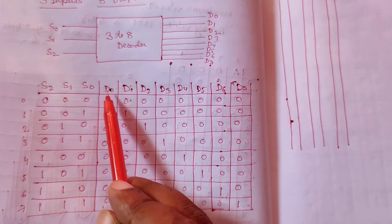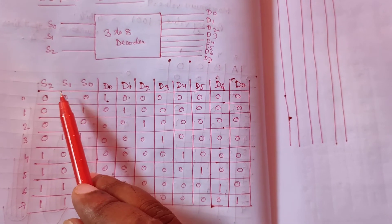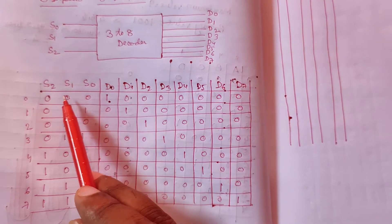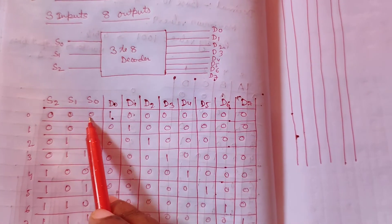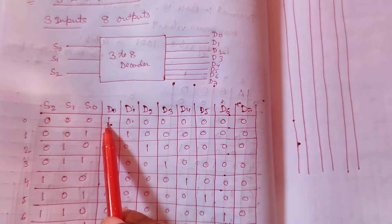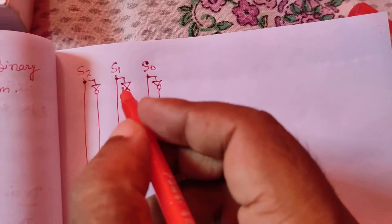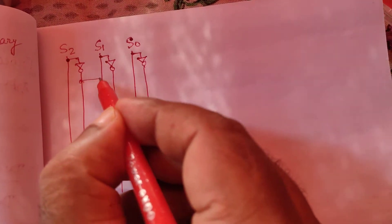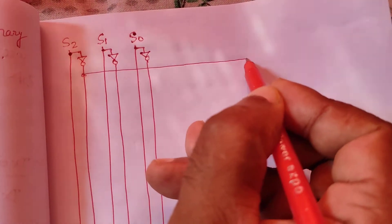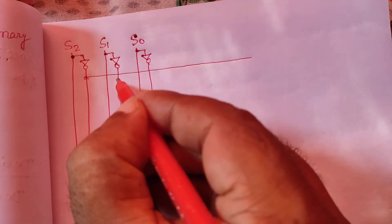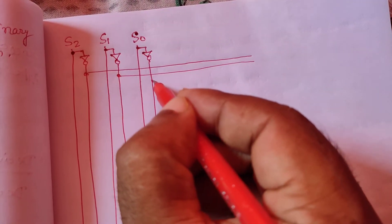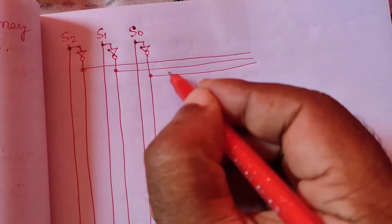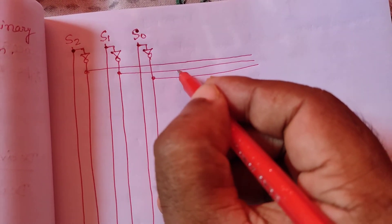When we want D0, all three inputs S2, S1, and S0 are zero — all low inputs. S2 is zero, S1 is zero, S0 is zero. We check here: S2 is zero from this line, S1 is also zero, and S0 is also zero.